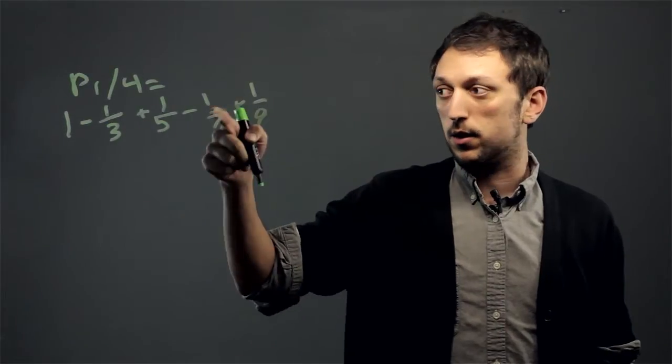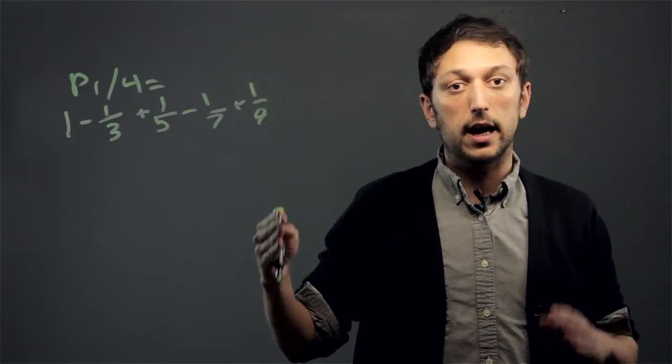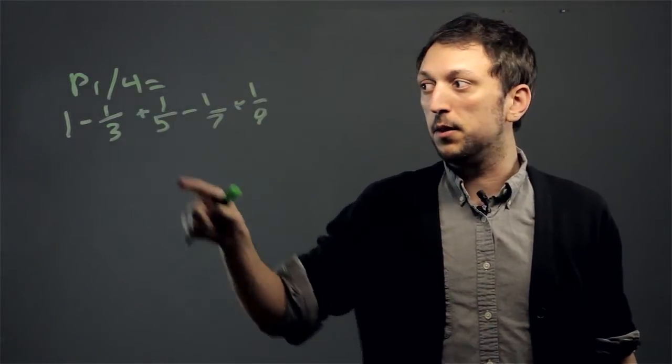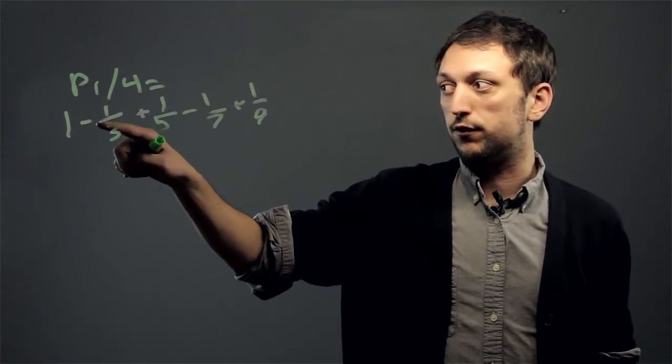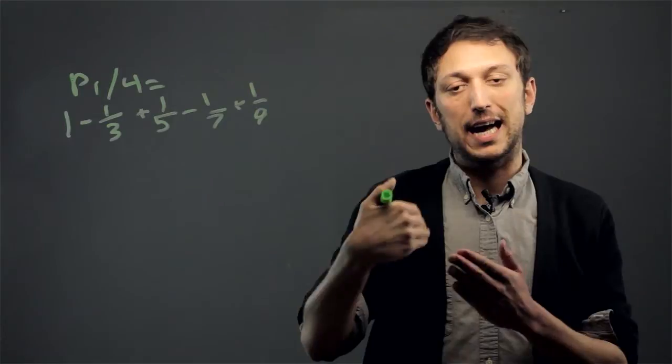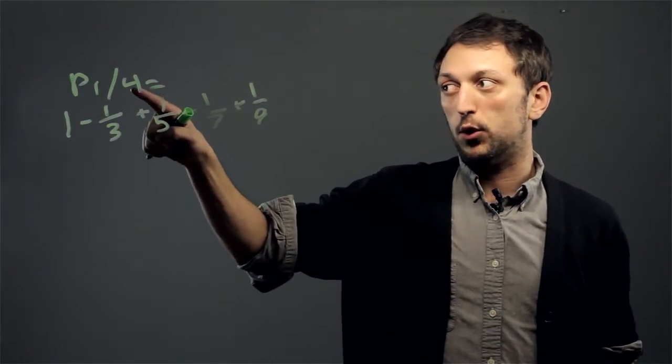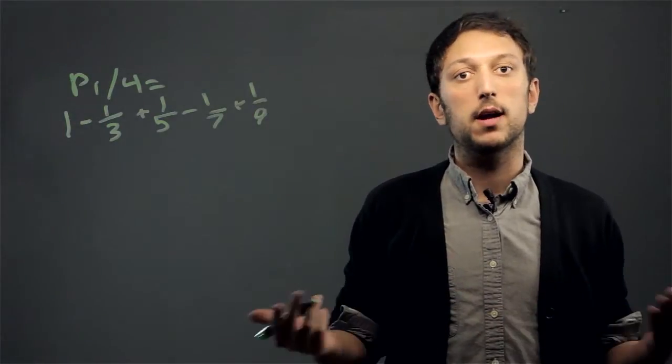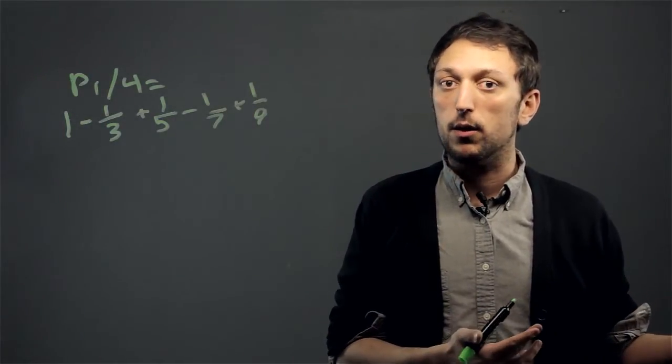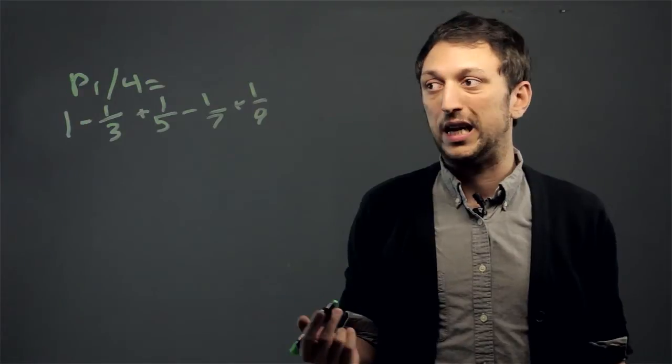This series continues into infinity and you would slowly approximate pi. You keep going up by odd denominators—first you subtract then you add—and as you keep going you multiply by 4 and you'll get closer and closer to pi. The problem is we have not figured out exactly how far pi goes, so this is as good as we can get.